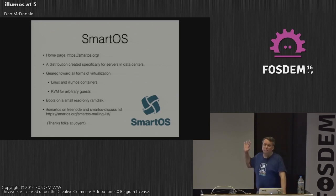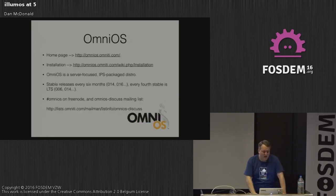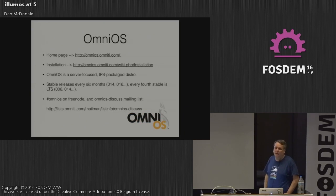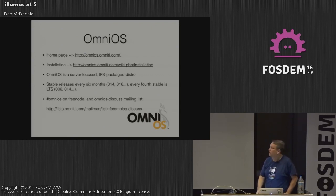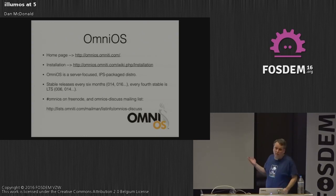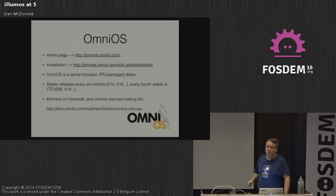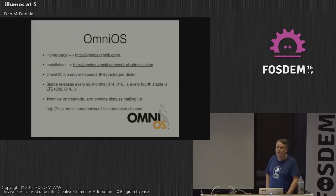SmartOS is on #smartos on Freenode and has a discussion list. OmniOS is my distro — our homepage is there. I didn't start it; I joined OmniTI after OmniOS had been out for a year. It's server-focused, image packaging system. We release stables every six months and long-term releases every two years. We're on r014 for long-term right now; r016 is our current stable; r018 will be coming out this spring. We're on Freenode and have a mailing list.